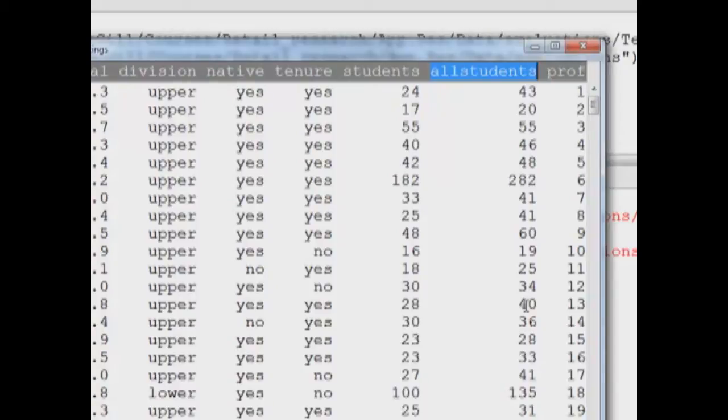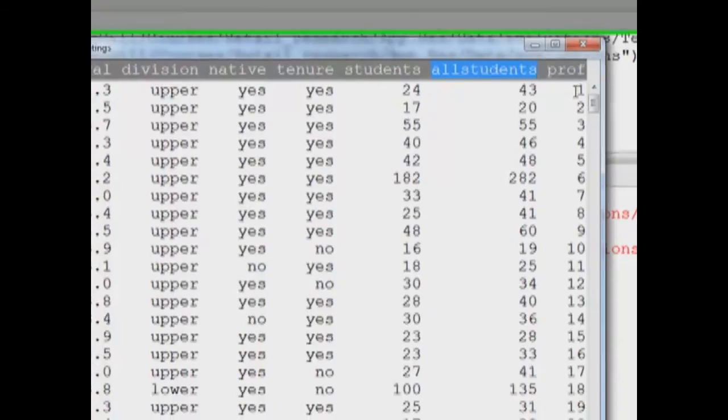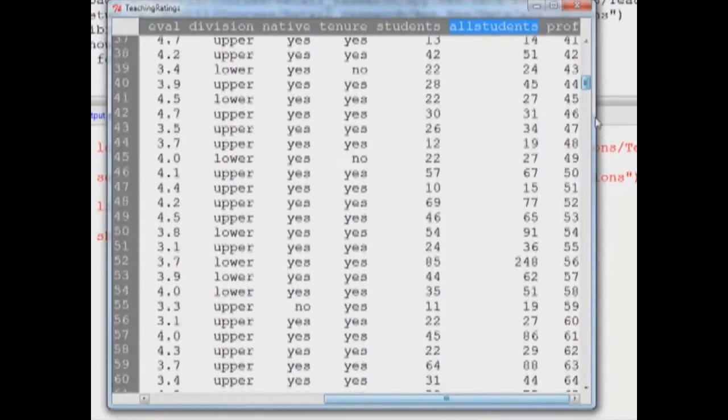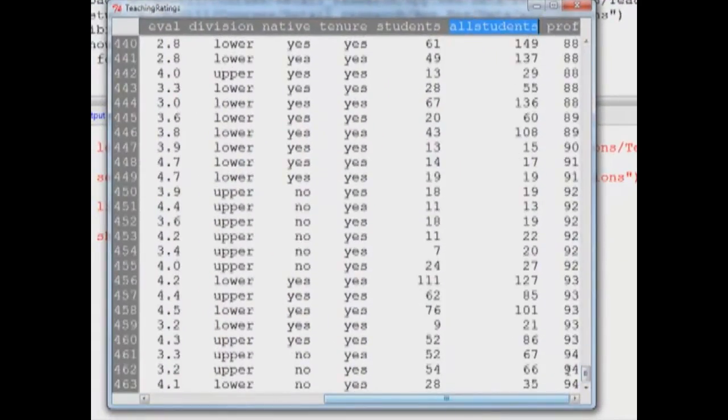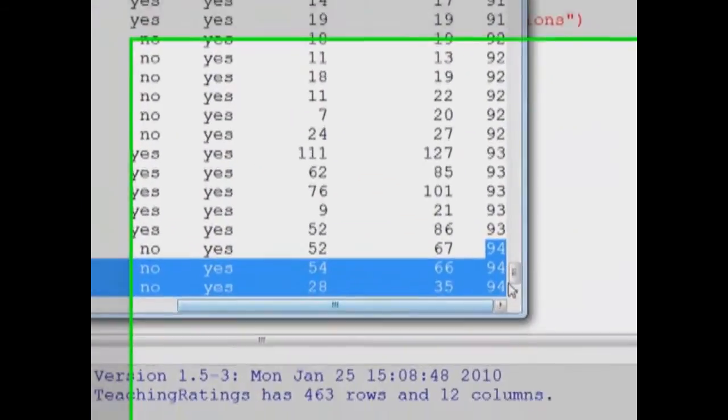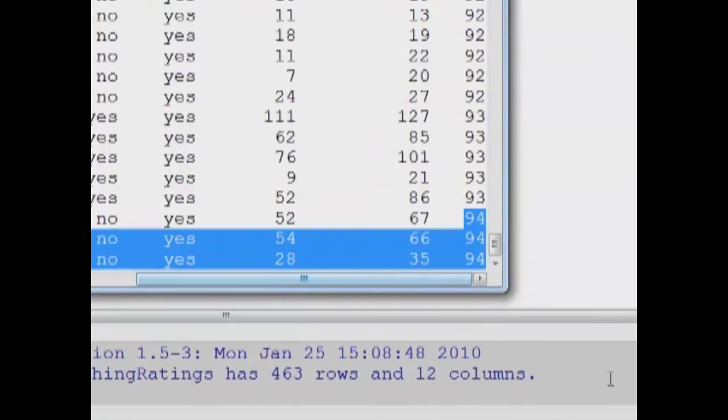Also this variable called professor: there were more than one course taught by each professor, and hence this is a unique ID for each professor. You will notice if I scroll down, there are 94 professors, and professor number 94 has taught three courses.